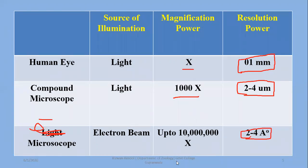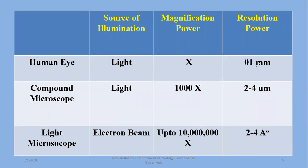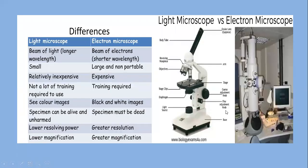Note that the compound microscope is 500 times greater in resolution than the human eye, and the light microscope is 250,000 times greater in resolution power compared to the human eye. The electron microscope has even greater resolution power than the light microscope.